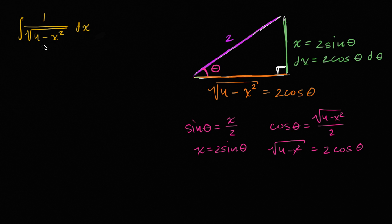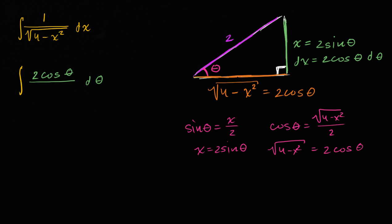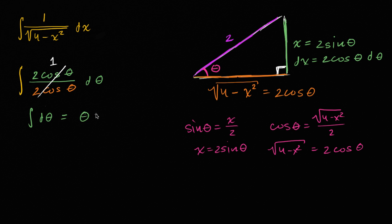Now let's evaluate using this substitution. The integral becomes: the numerator dx is two cosine theta dθ, and the denominator — the square root of four minus x squared — is also two cosine theta. So two cosine theta over two cosine theta is just one, and the integral simplifies to ∫dθ, which equals theta plus C.